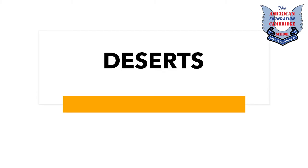What are deserts? A desert is basically a barren or unfertile land whose surface is exposed to sunlight and receives very little precipitation each year. Deserts are places that have less than 250 millimeters of rainfall per year.